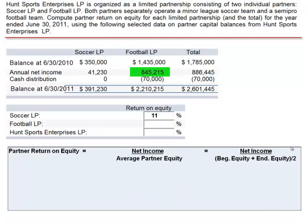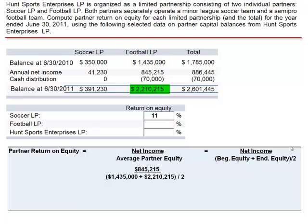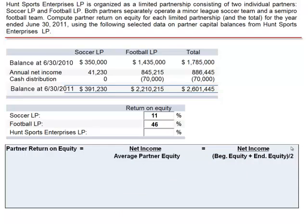For Football LP, $845,215 in net income, divided by beginning equity $1,435,000 plus ending equity $2,210,215, divided by 2. $845,215 divided by $1,822,608 is a partner return on equity of 46%.